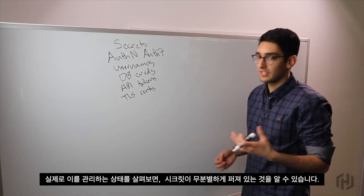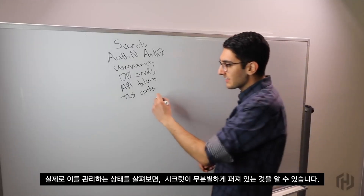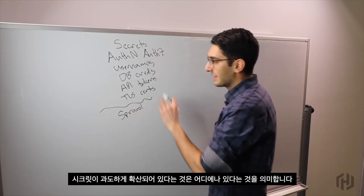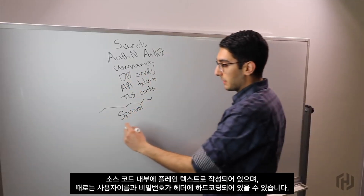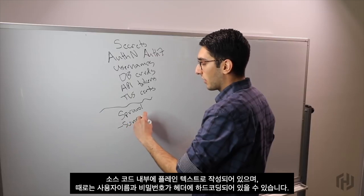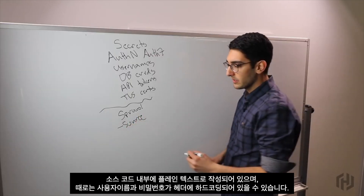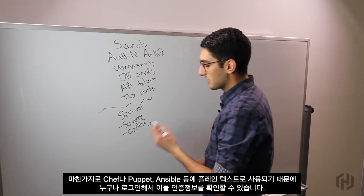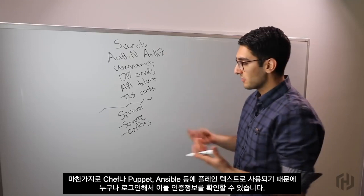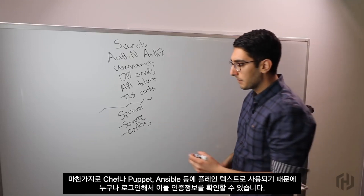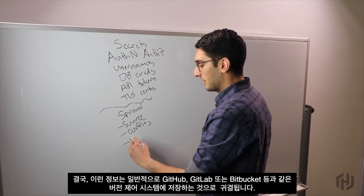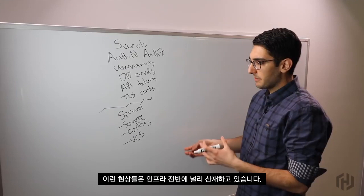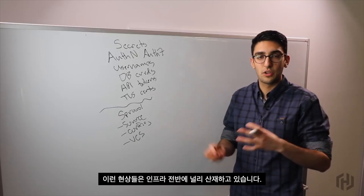When we look at the state of the world of how these things get managed, in practice what we see is secret sprawl — these secrets end up everywhere. They're in plain text inside of our source code, maybe hard-coded in a header with the username and password. They end up inside of configuration management, living in plain text in Chef, Puppet, or Ansible, where anyone can log in and see the credentials. And ultimately, all of this typically ends up living in a version control system like GitHub, GitLab, or Bitbucket.